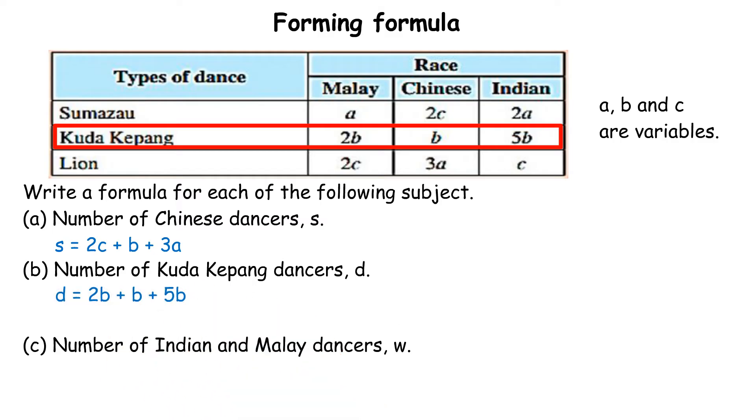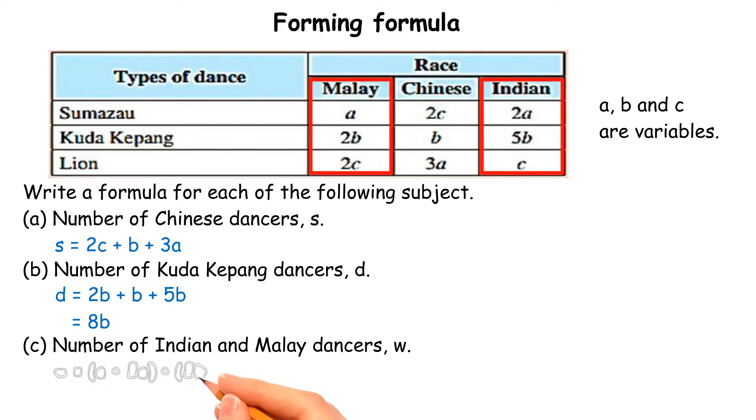B, d equals 2b plus b plus 5b equals 8b. C, w equals 2a plus 2b plus 5b plus 2c plus c equals 3a plus 7b plus 3c.